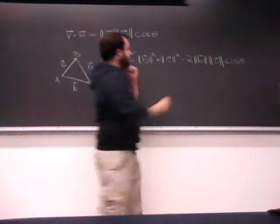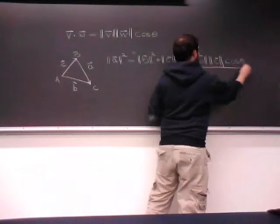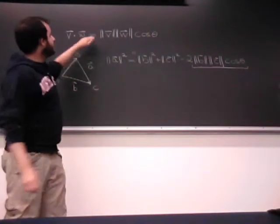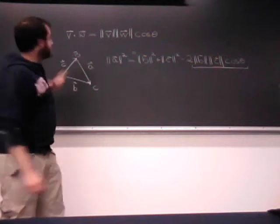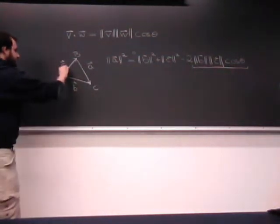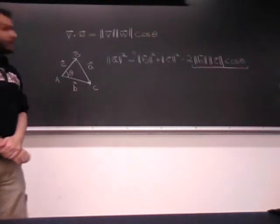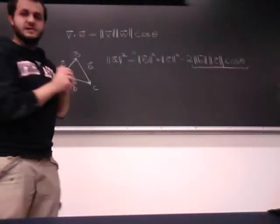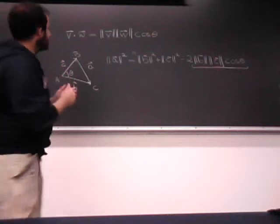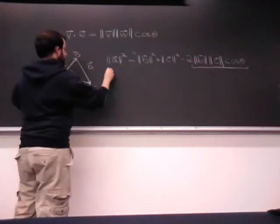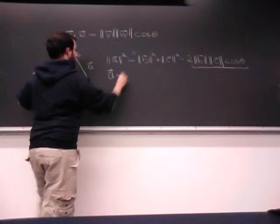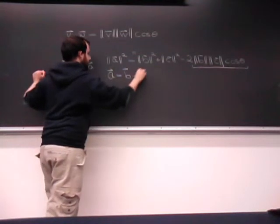We should automatically recognize the right-hand side as our formula for the dot product. The reason this is true is because we can write vector a as the vector b minus c, because if you take vector b and add on negative c, you end up getting vector a.